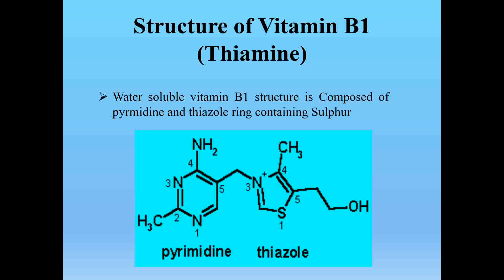Position 5 of the thiazol ring is a carbon atom attached back to the sulfur atom at position 1. The additional substituents on the thiazol ring are at positions 3, 4, and 5: position 3 is the nitrogen connecting both rings, position 4 has a methyl group, and position 5 has a hydroxyethyl group. There are two double bonds in the thiazol ring, while the pyrimidine ring has three double bonds.